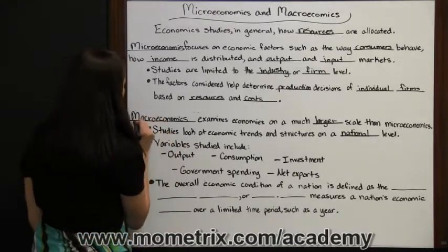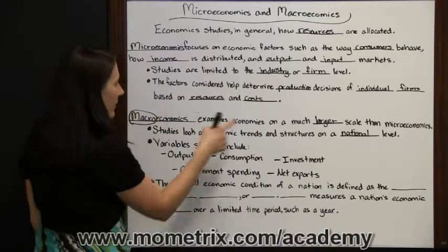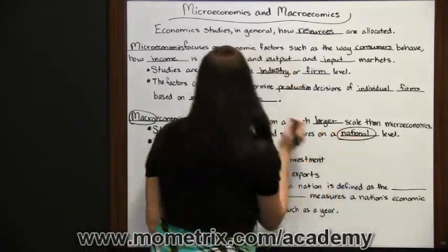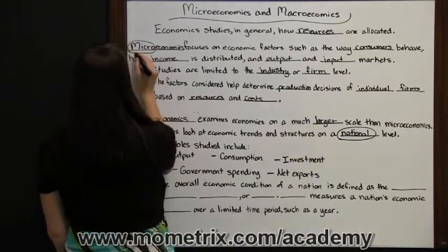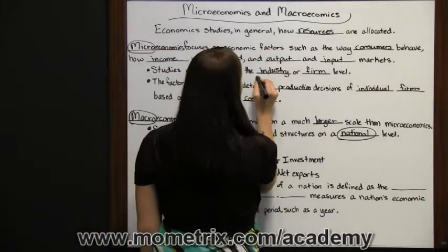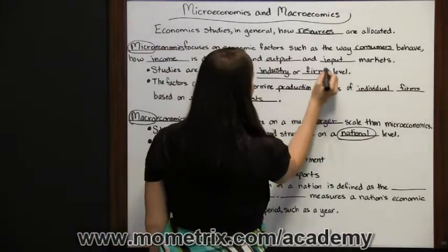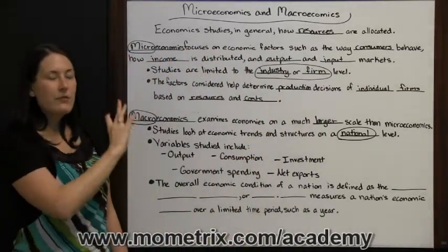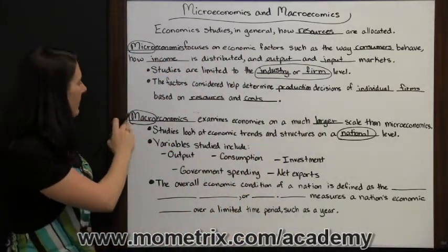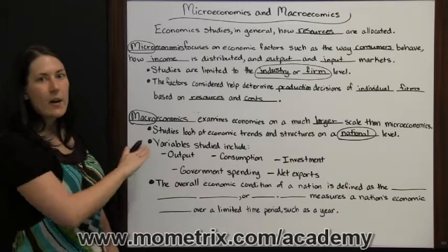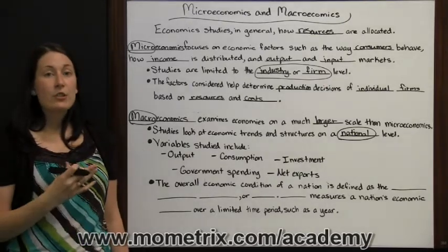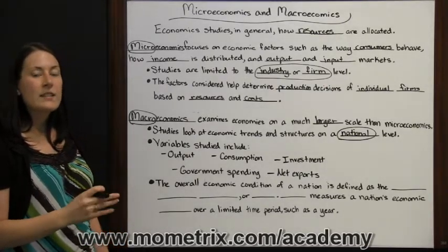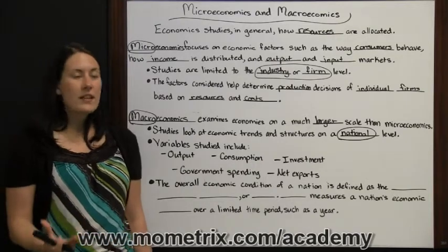To remember that: macro is much larger, so it's at a national level. Micro is smaller, so it's at the industry or firm level. Those are the important things to remember to differentiate here. With macroeconomics, there are some different variables that are looked at and studied to look for trends across a whole nation's economy.